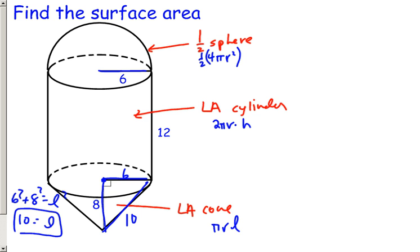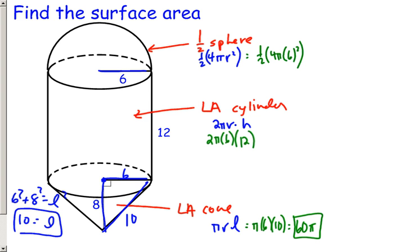So πrL, π, radius is 6, slant height is 10, gives me 60π. 2πr, 2π times 6 times the height of the cylinder, which is 12. One half, 4πr², the radius is 6, half of 4π(6²) is half of 36 times 4, so it's going to give you 72π. 2 times 6 times 12 is actually going to be 144π.